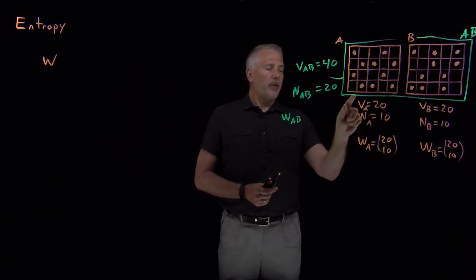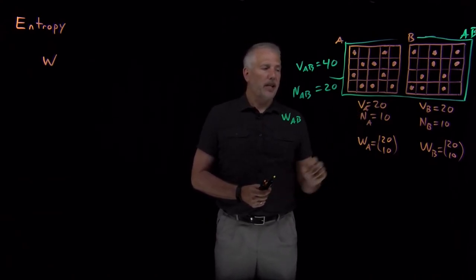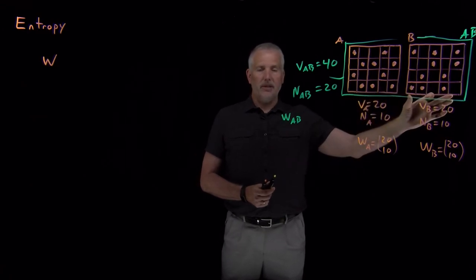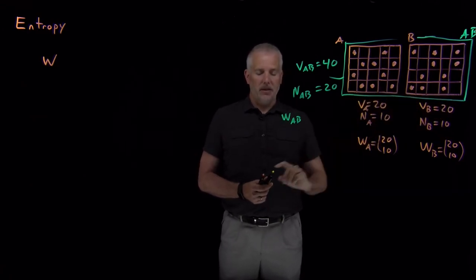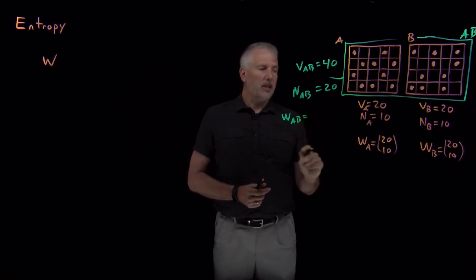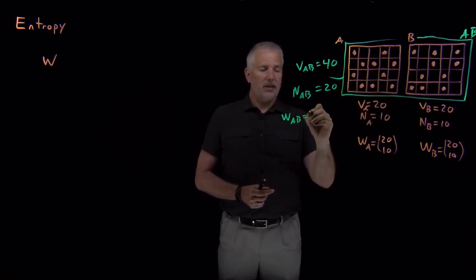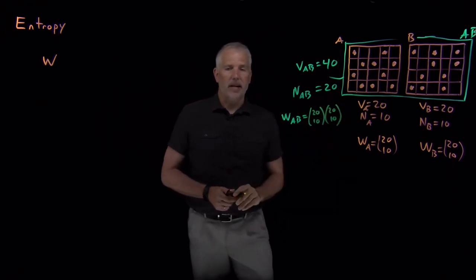Really, System AB, the right way to describe System AB would be to say how many ways are there of putting 10 molecules in this box and putting 10 molecules in this second box. The multiplicity would be 20 choose 10 for the left half and multiplying by 20 choose 10 on the right half.